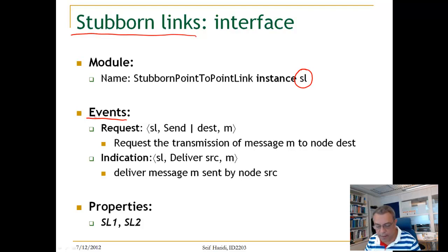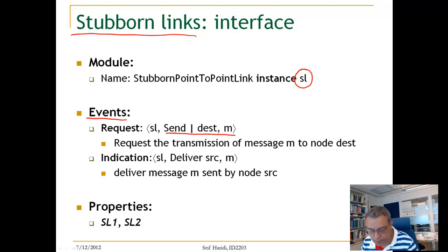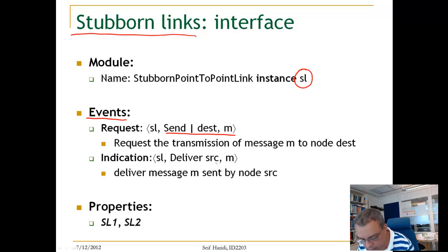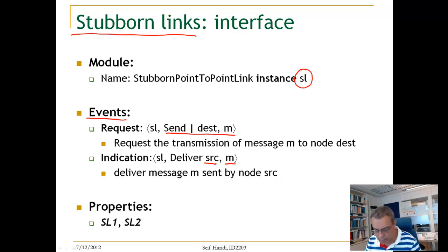The request event is just sending a message from a source to a destination, and the message is M. Then the delivery of the message, which is an indication event, indicates who is the source of the message and here is the message.